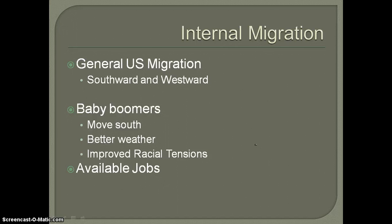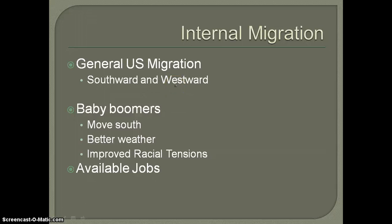Within the United States, we've begun to see a general trend where people are moving from the north to the south, and also moving southward and westward. We've also seen people move from the extreme west to the south and southwest — mainly from places like California to Arizona, Texas, and New Mexico. A lot of this has to do with changes that have taken place in the United States.